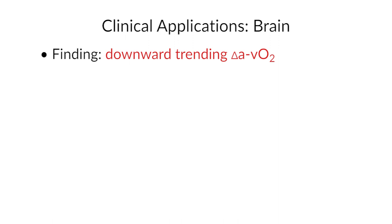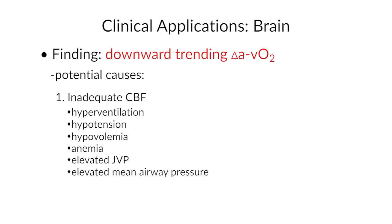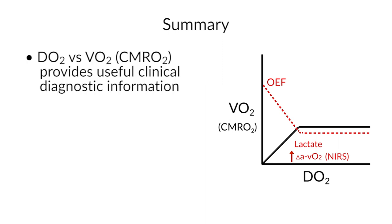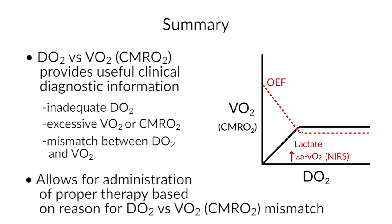Similarly, for the brain, let's say we identify an AVO2 difference evidenced by your NIRS reading with a downward trend. You would have to ask: is it because cerebral blood flow is inadequate? In other words: hyperventilation, hypotension, hypovolemia, anemia, elevated jugular venous pressure, high mean airway pressure from the ventilator, seizures. And from this, you can see that using delivery versus consumption gives you very powerful clinical diagnostic tools for inadequate oxygen delivery, excessive consumption, or a mismatch of delivery to consumption, and it allows you to institute the proper therapy based on the reason for the delivery versus consumption mismatch. The same holds true for the central nervous system.